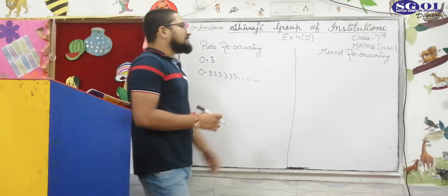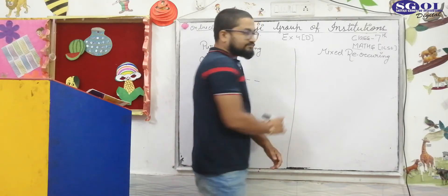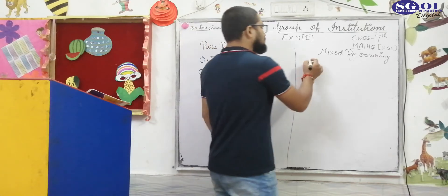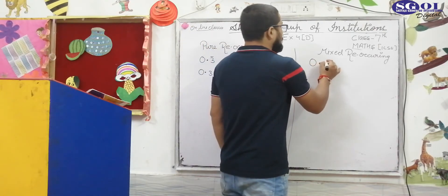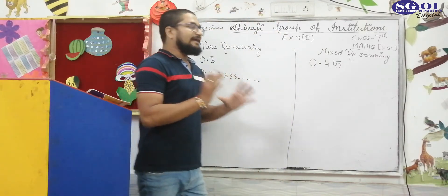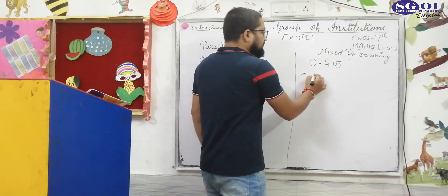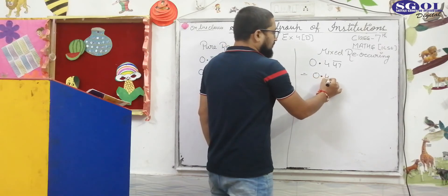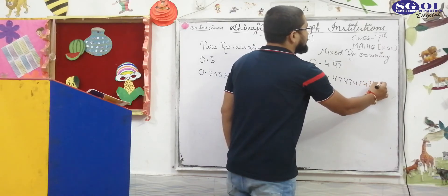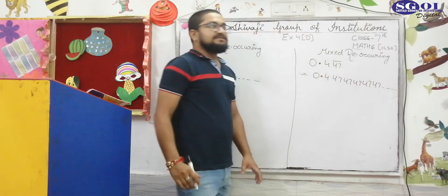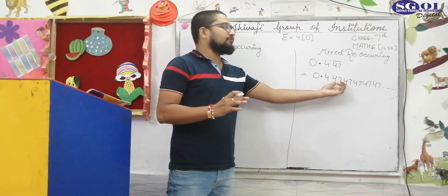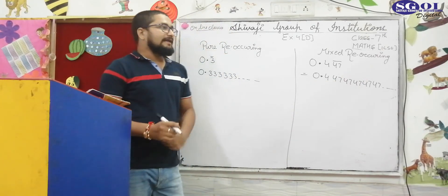Next is mixed reoccurring decimals. For example, I write 0.4 and then 47 with a bar over 47. That means when you write it out, you get 0.4 then 47, then 47, then 47 repeating up to infinite times. You are repeating the two digits 4 and 7 infinitely.